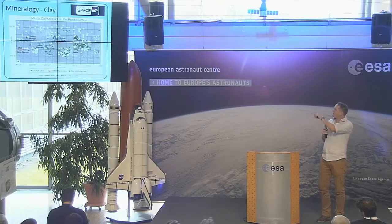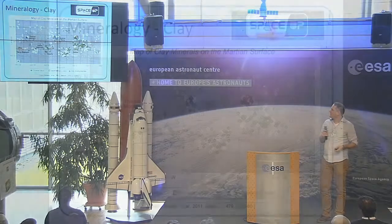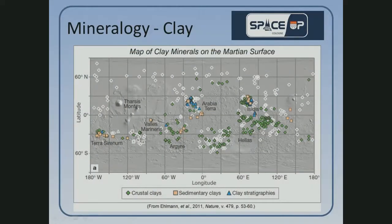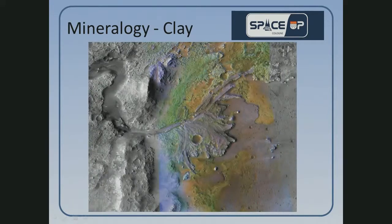We have found clay minerals quite a lot on Mars. The red areas on this map show where clay is - this shows where we found them on Mars. I particularly like this picture because it clearly shows that on the highlands you hardly see any clay, but in areas where a lot of water would have flowed, you see a lot of clay.